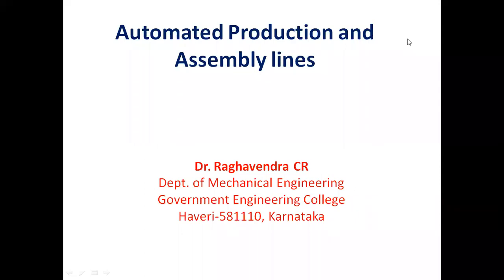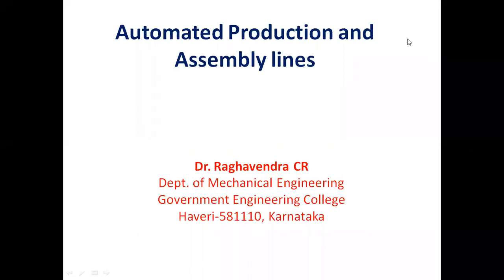Automation can be classified into three types: fixed automation, flexible automation, and programmable automation. Fixed automation is also called rigid automation, where the flow lines and software remain the same. It is a unique type of operation-production system where the sequence of operations cannot be changed.